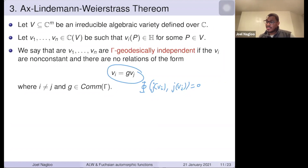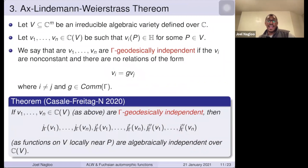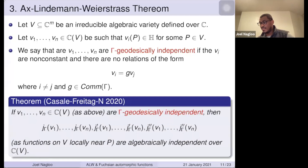When gamma is arithmetic, there is non-trivial intersection with work of Pila for the j-function, where he proved the same theorem. Other relevant works include Peterzimmer, Ullmo-Yafaev, and Klinger-Ullmo-Yafaev, mostly done without derivatives. Our work handles the arithmetic and non-arithmetic cases, and includes derivatives, all at once.